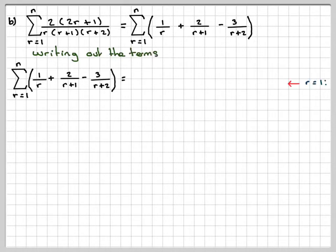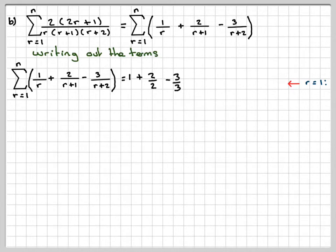When r=1, we get 1/1 + 2/2 - 3/3, leaving those as is for the moment. When r=2, we get 1/2 + 2/3 - 3/4.